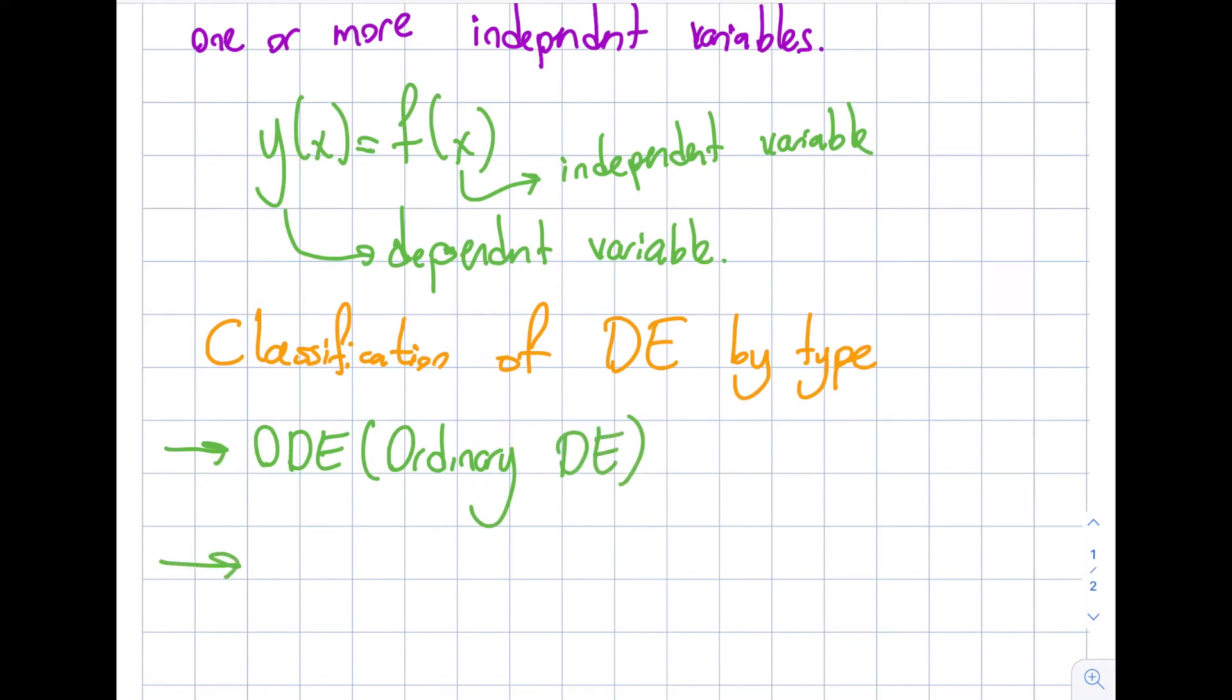And I also have something called PDE, the partial differential equation. The way that I differentiate these two is looking at the independent variable. The number of independent variables will determine that. If I have a table, the number of independent variables is going to be 1, I will have one single independent variable to call it an ODE.